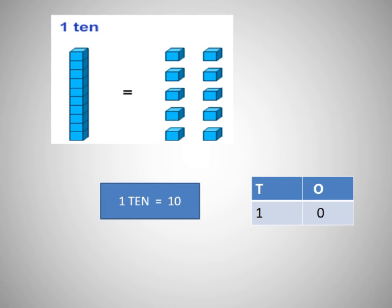In ones place you will write zero and in tens place you will write one. To write numbers greater than nine, we need two places side by side. The place to the right is for the ones. The place to the left is for the tens.